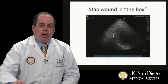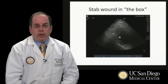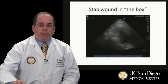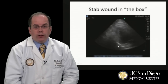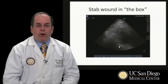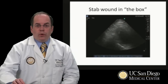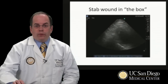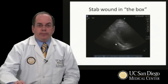Here's a patient who has a stab wound in the box. Although the amount of fluid here is small, it can be picked up. If you look posteriorly here, which is often the place that fluid is first seen, you'll see that occasionally a black line appears between the layers of the pericardium and the heart. This is typical of a patient who has pericardial effusion and may be having the onset of pericardial tamponade.